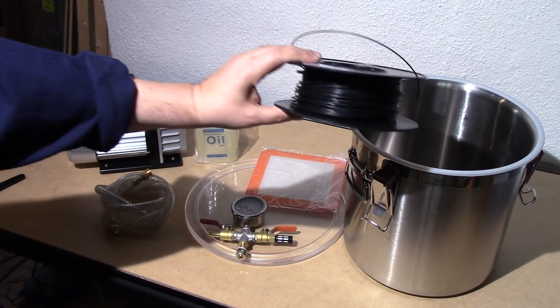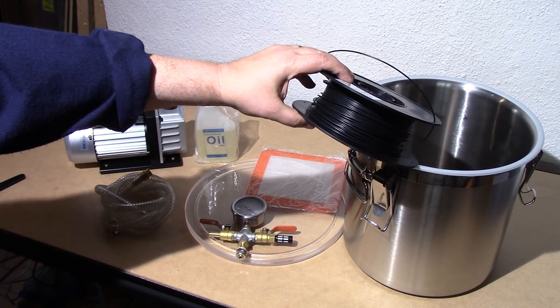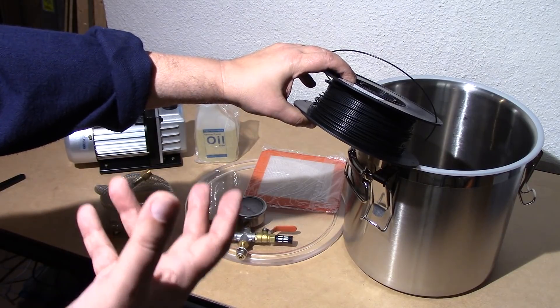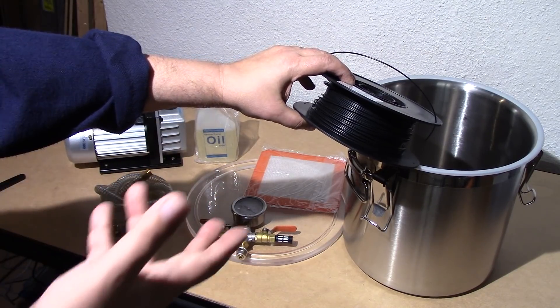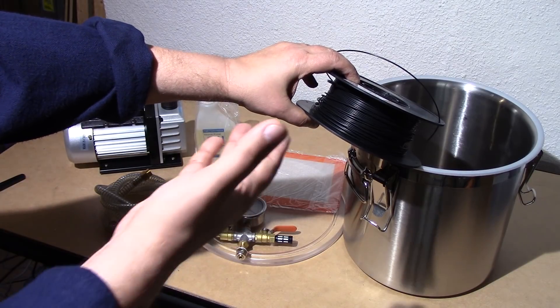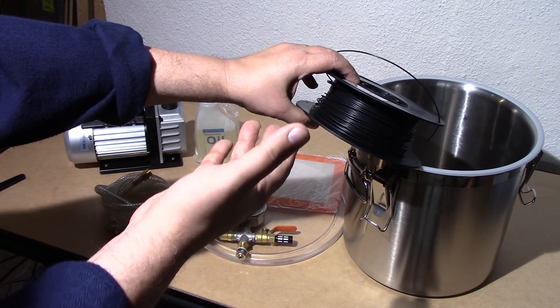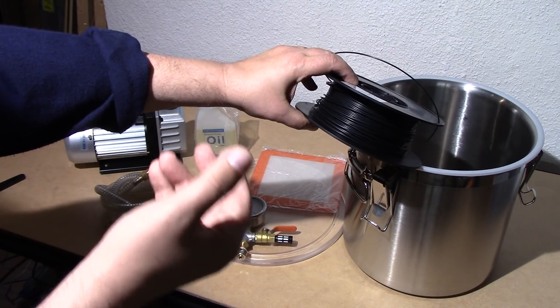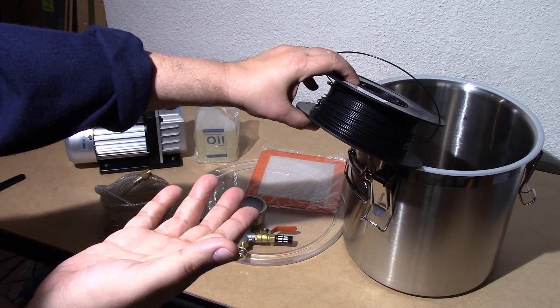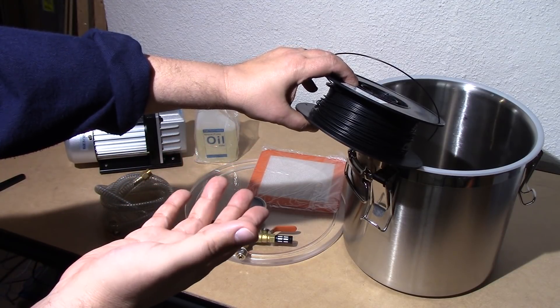Now, the way that the food dryer works is it circulates, you know, warm, dry air, excites the water, water evaporates, water is removed, but unless it's getting down to the center of this, which I don't see how you're gonna get enough air circulation down to the center of this, you know, how is that going to work? How is that really going to dry the center of the filament?